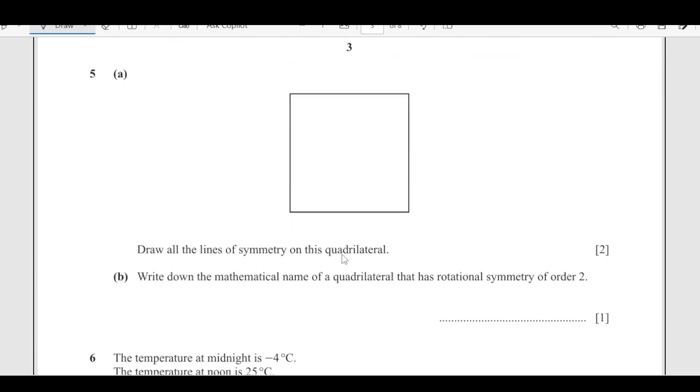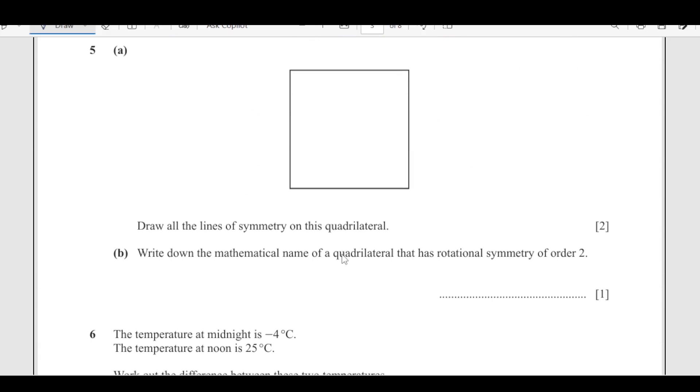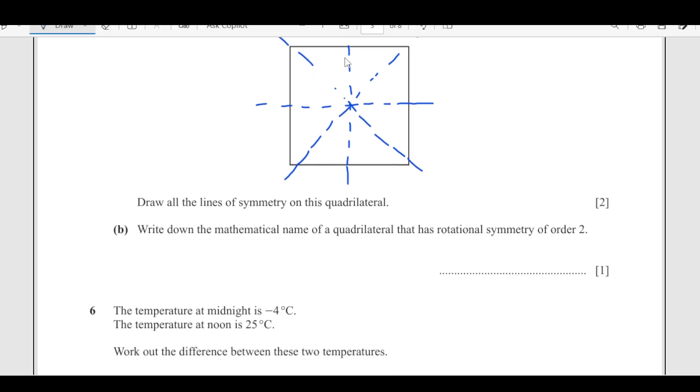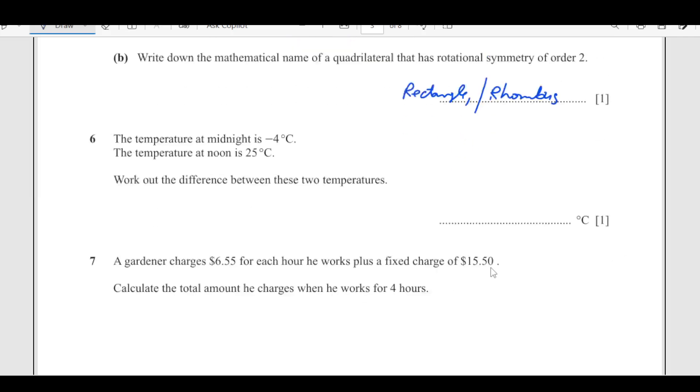Number 5, draw all lines of symmetry in this quadrilateral. Line of symmetry divides the figure into two equal parts so that it comes the reflection of each other. As this quadrilateral is a square, it will have four lines of symmetry like this. Write down the mathematical name of the quadrilateral that has rotational symmetry of order 2. I can write some of them like rectangle, rhombus, and also parallelogram, but we need to write only one here.